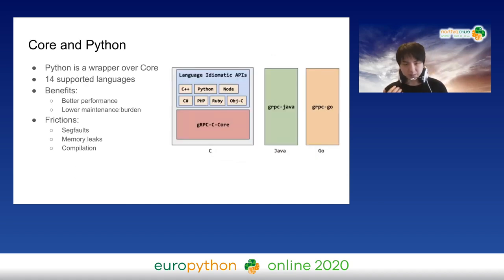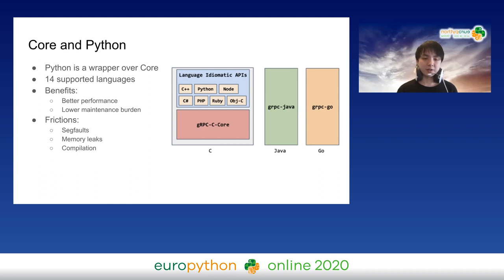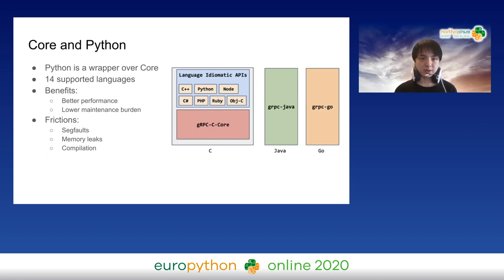Before introducing gRPC Python, we have to introduce gRPC Core. Core is actually the component that handles all the HTTP frame processing, serving, compression, security, load balancing — all this complex stuff. Python is just a thin wrapper over it. It handles so much functionality that it would be unwise to build it again for each different language. So many languages like C++, Python, and Ruby are just thin wrappers over it. In total, we have 14 supported languages, and it gives us not only better performance but also lowers our maintenance burden.